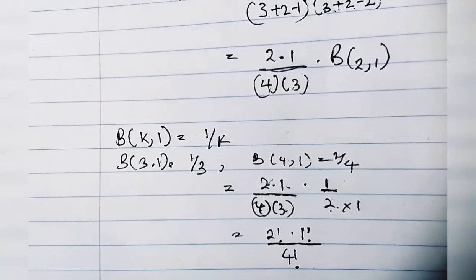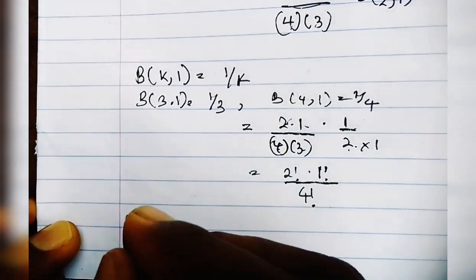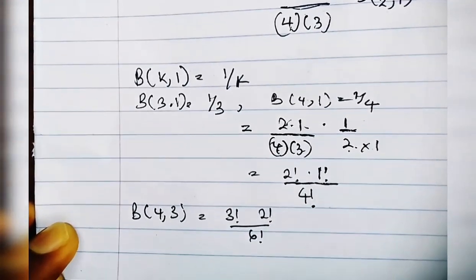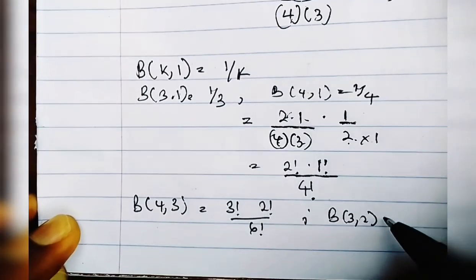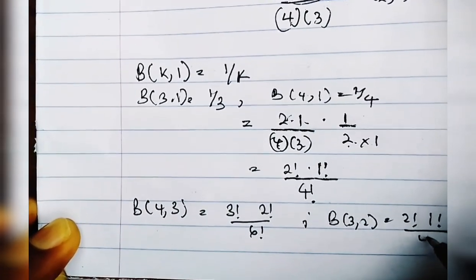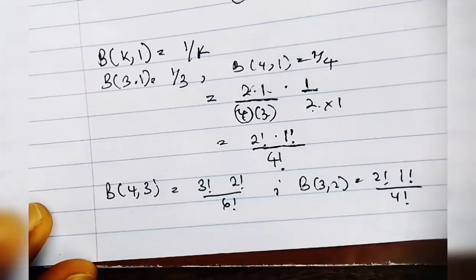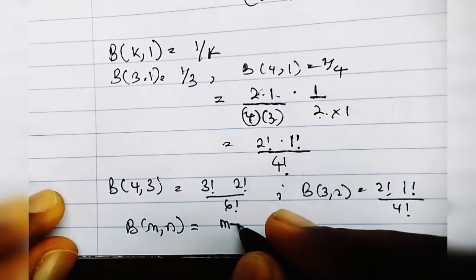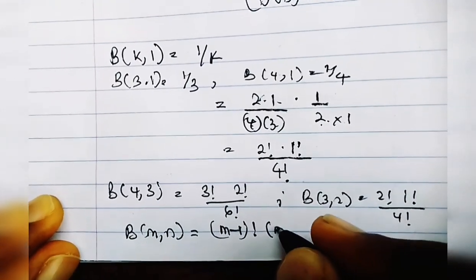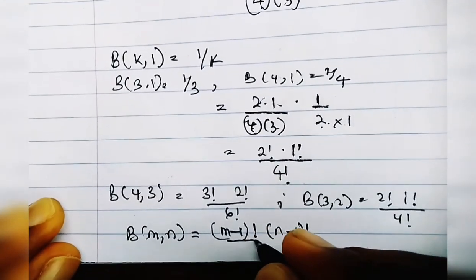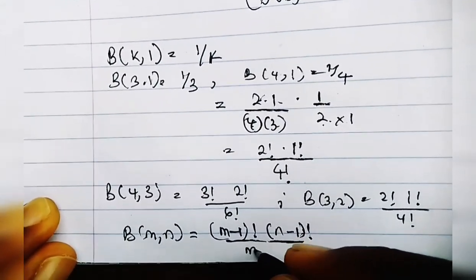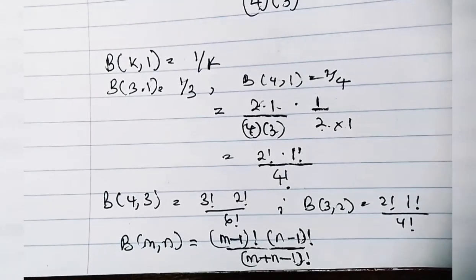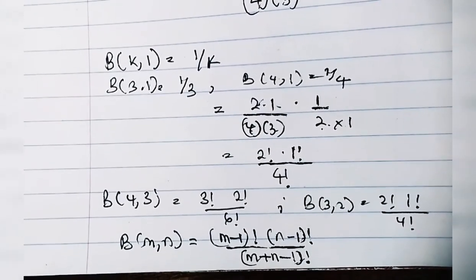The main point I'm trying to prove here is: looking at all the answers we've been getting — Beta(4,3) gave us 3! times 2! over 6!, and Beta(3,2) gives us 2! times 1! over 4! — we can derive a general form: Beta(m, n) = (m-1)! times (n-1)! divided by (m+n-1)!. This form takes us straight to the answer.